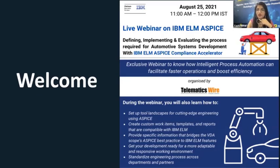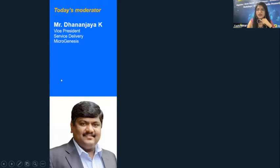Our speakers today are Ms. Vilasani Prabhu, Automotive Industry Expert; Mr. Andreas Schwind, Solution Engineer, IBM Australia; Mr. Dhananjay K, VP Technical Services, Microgenesis Techsoft Private Limited; and Mr. Murugan Murudhapan, Solution Engineer, Engineering Lifecycle Management, IBM AI Applications. Today's webinar is organized jointly by IBM and Microgenesis to demonstrate how intelligent process automation can facilitate faster operations and boost efficiency. If you have any questions during their presentations, please type them into the Q&A box. You may send in your questions at any time, and we'll address them during the Q&A session at the end. So let's begin the webinar.